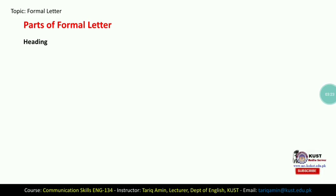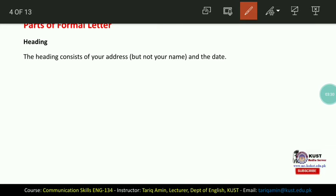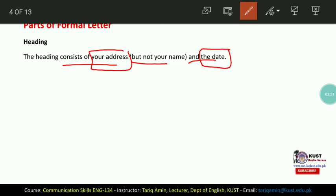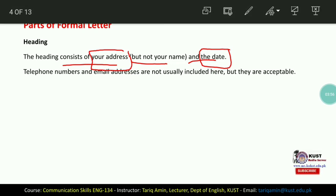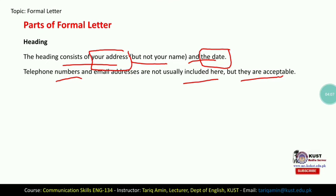The very first part of a formal letter is the heading. The heading consists of your address — but not your name — and the date. Telephone numbers and email addresses are not usually included in the heading, but they are acceptable. You can include your email address or cell phone number if you wish.